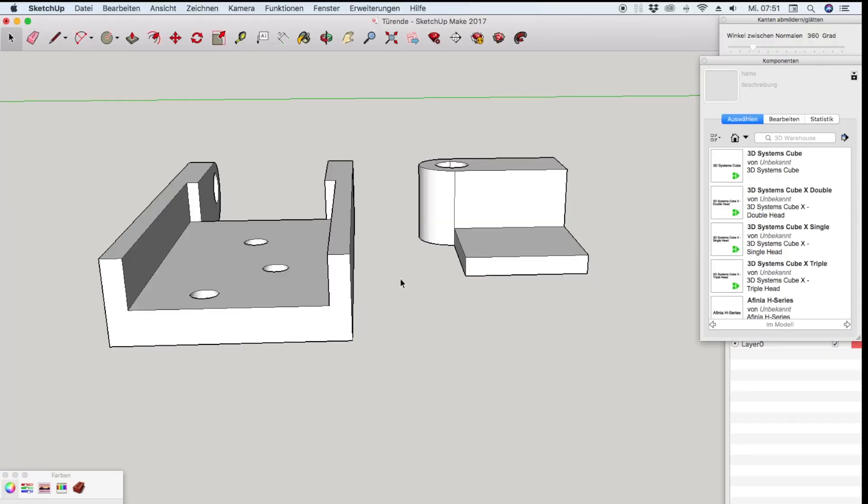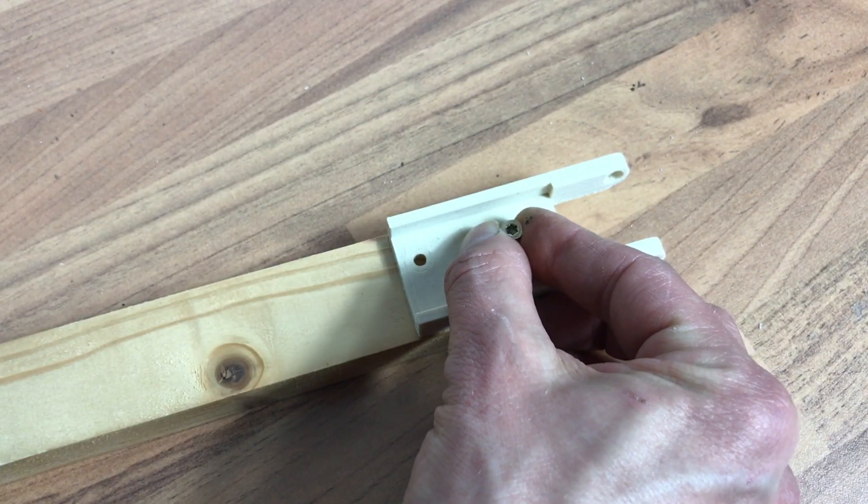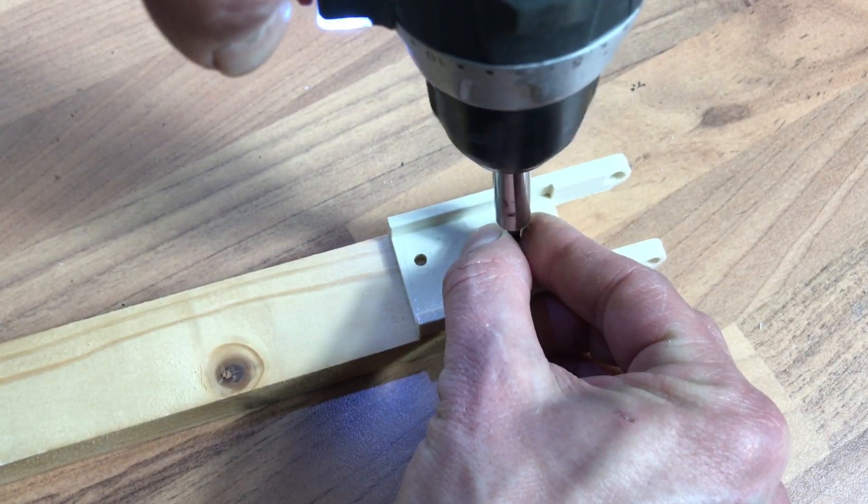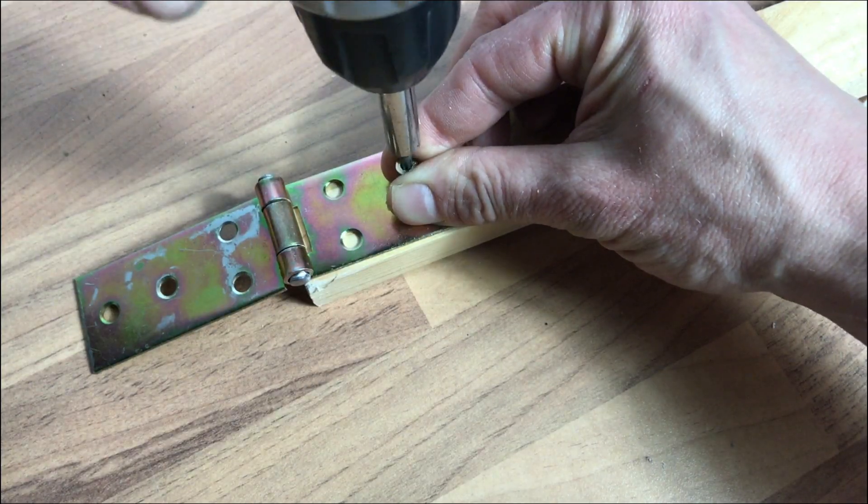In the same way I also produce the mounting for the linear motor. I screw the mounting for the motor onto one end of an about 20cm long piece of strip and a hinge to the other end.